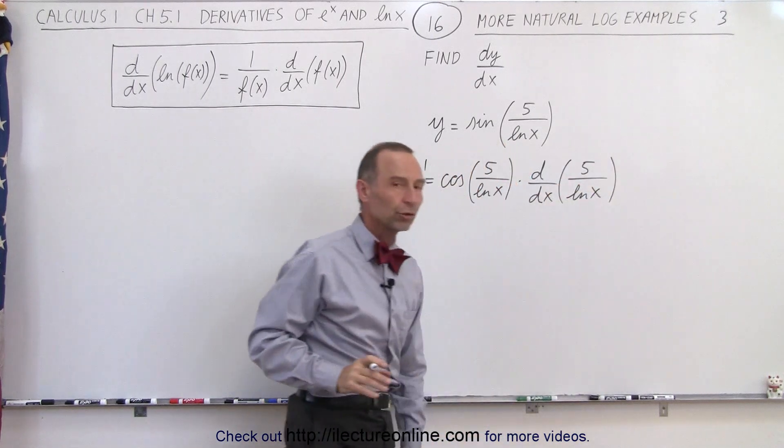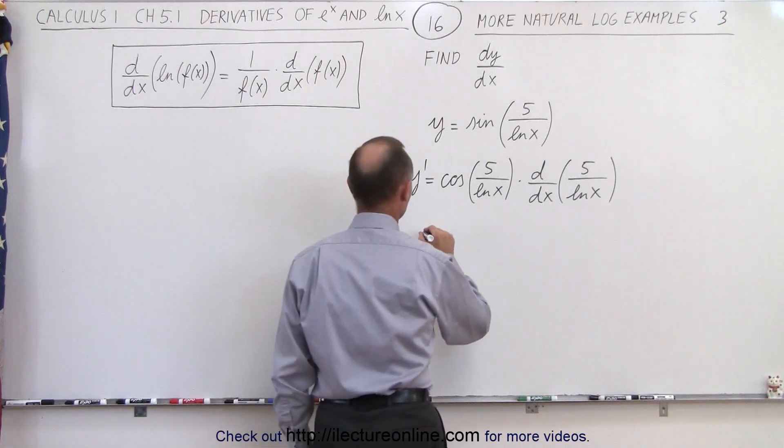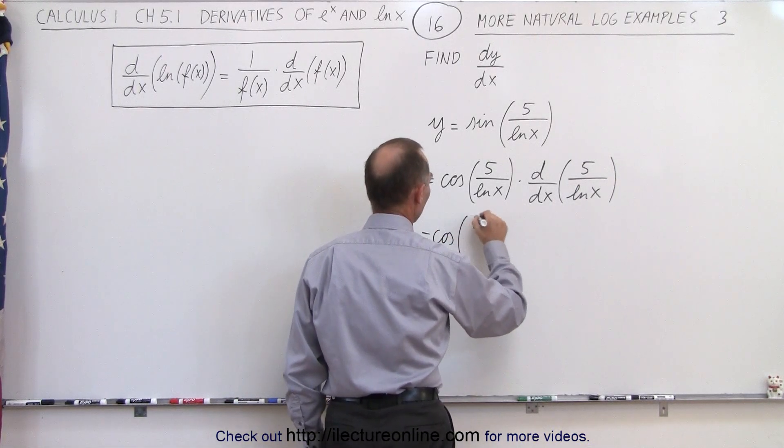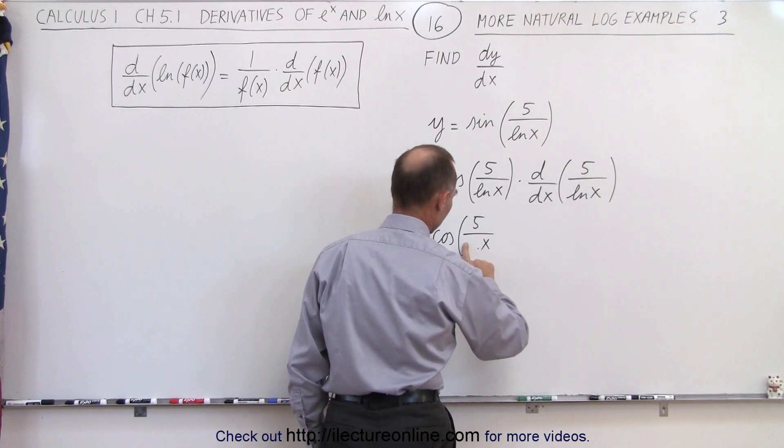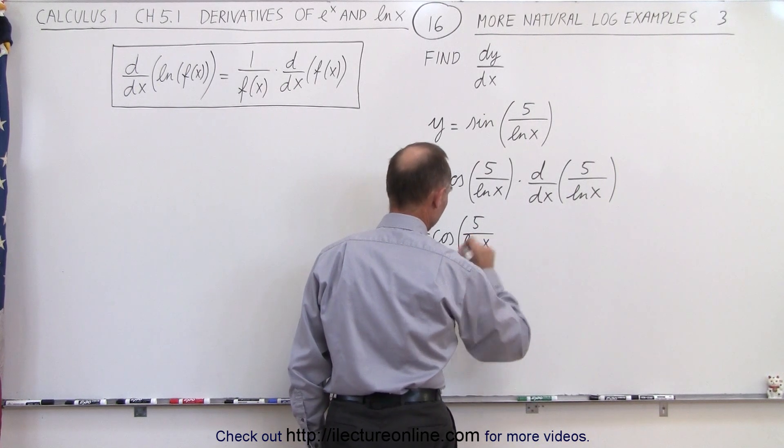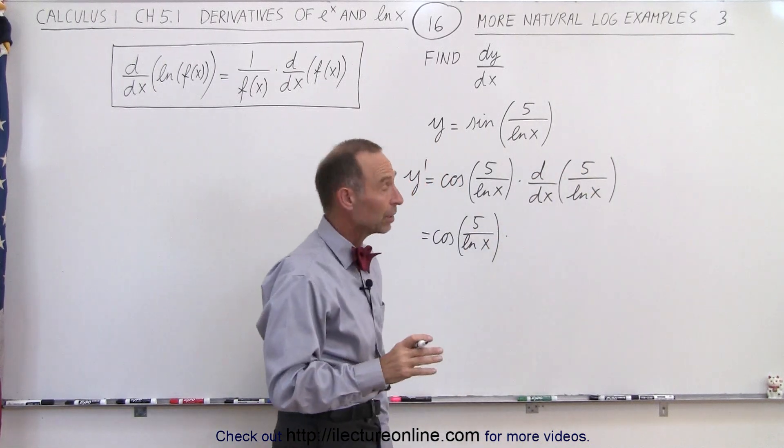Now here we have a quotient, so we're going to use the quotient rule in that case. So this becomes equal to the cosine of 5 divided by the natural log of x. That's a terrible looking natural log here. There, that's better. Times the derivative of that, so we use the quotient rule.